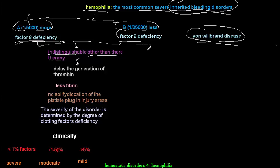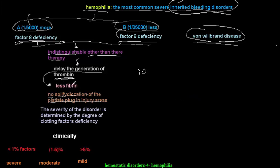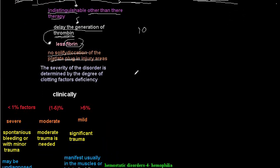Deficiency in factor 8 or factor 9 leads to a delay in thrombin generation. Normally, factors 8 and 9 activate factor 10, which converts prothrombin to thrombin, and thrombin then converts fibrinogen to fibrin. With deficiency in these factors, thrombin generation is delayed, resulting in less fibrin and failure to solidify the platelet plug at the injury site.